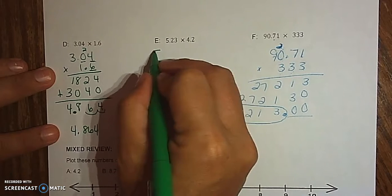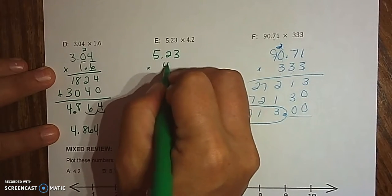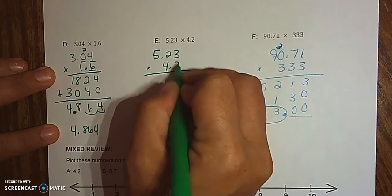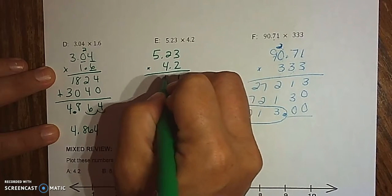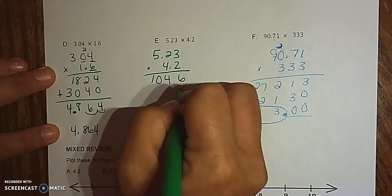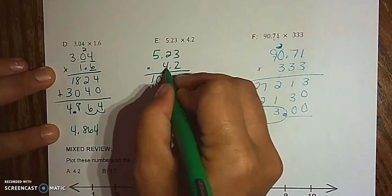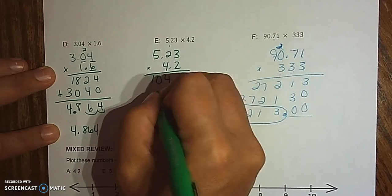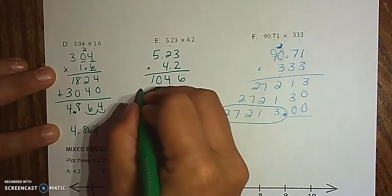On E, 5.23 times 4.2. 3 times 2 is 6. 2 times 2 is 4. 5 times 2 is 10. Bring down a 0. 3 times 4 is 12. 4 times 2 is 8, plus 1 is 9. 5 times 4 is 20.